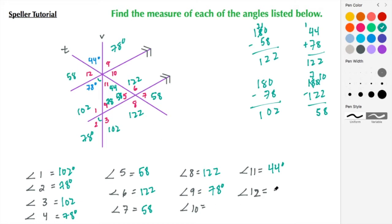And angle 12 and angle 10 are vertical, so that means they're also congruent.